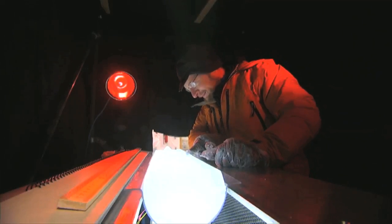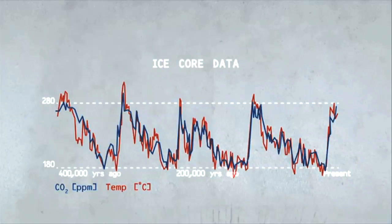This is the signature of natural variation, the cycle of the ice ages driven by changes in Earth's orbit with no human involvement.